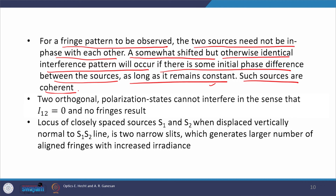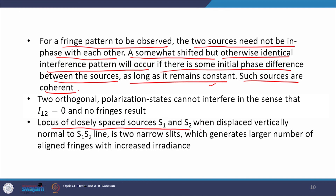Another observation: two orthogonally polarized states cannot interfere — I₁₂ = 0 and no fringes result. If we let two cross-polarized or orthogonally polarized waves interfere, the interference term is 0 and we see uniform illumination on the observation plane. Although interference is happening, the fringes are not visible due to the orthogonal polarization of the waves. The locus of closely spaced sources S1 and S2, when displaced vertically normal to the S1–S2 line, is two narrow slits.